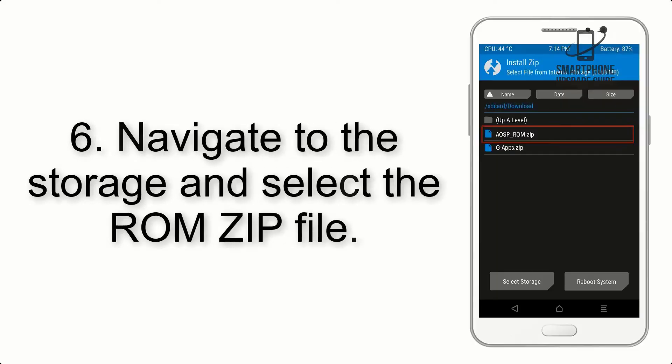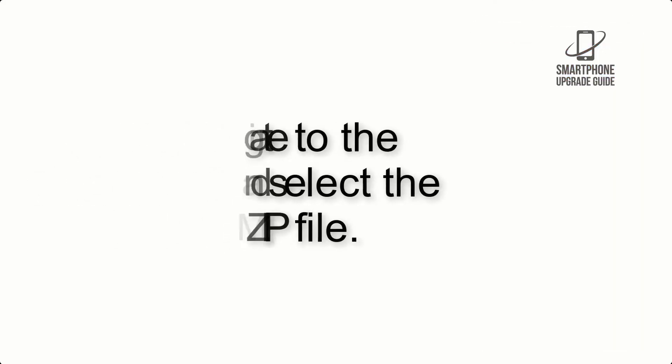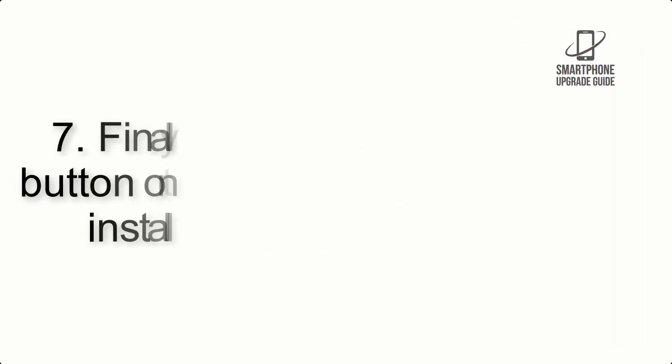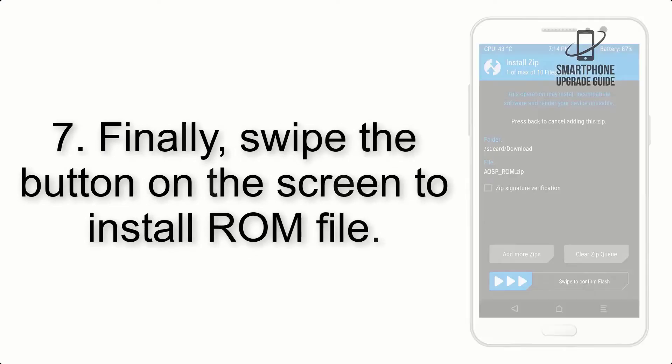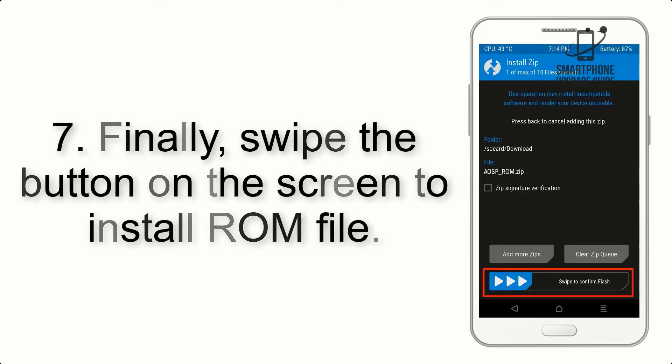Step 6: Navigate to the Storage and select the ROM ZIP file. Step 7: Finally, swipe the button on the screen to install the ROM file.